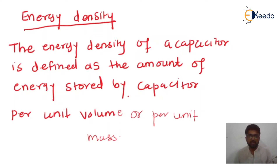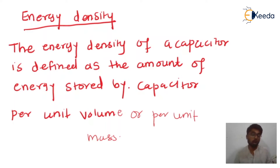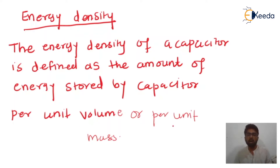I have written the definition of energy density. Energy density of a capacitor is defined as the amount of energy stored by a capacitor per unit volume or per unit mass. For example, suppose the volume is 300 liters — then how much energy is stored? That is the concept of energy density.